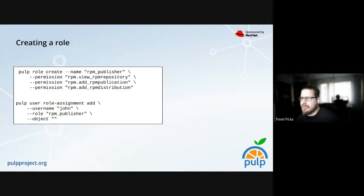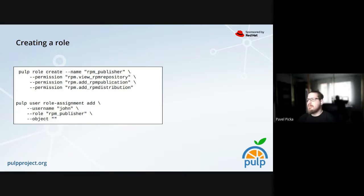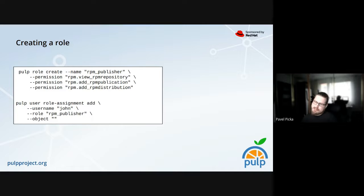Here is an example of how to create roles. From the previous slide you can see how to check all permissions. This uses the Pulp CLI, which is the best tool for this. You give the name of your new role and add the permissions needed. In this example, I create a role so a user can publish something — again it's not just one permission. You need to view a specific repository, at least at the object level, so if you can see it you can use it.